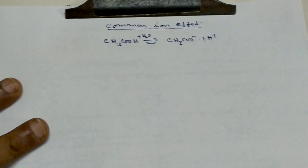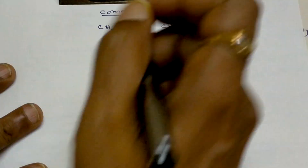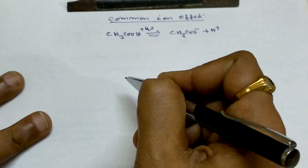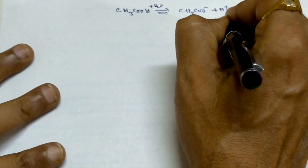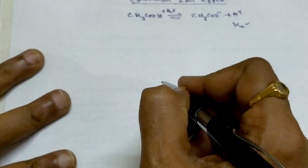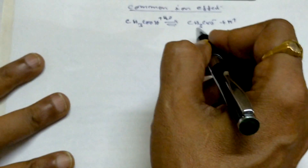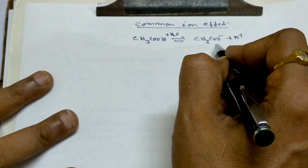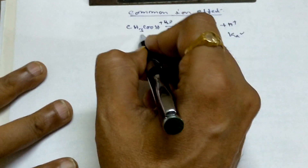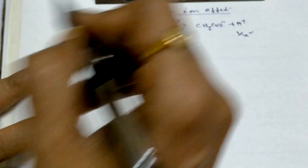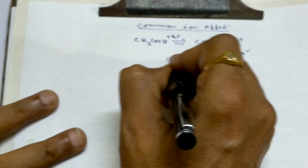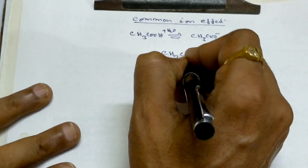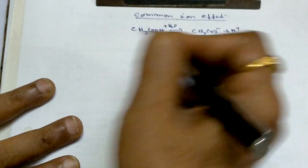Now, if I am adding an acetate ion, this Ka is already fixed. So to counter that, there will be a shift to the left side. How do we add acetate ion? That means I am adding sodium acetate — one more compound, like a salt type.